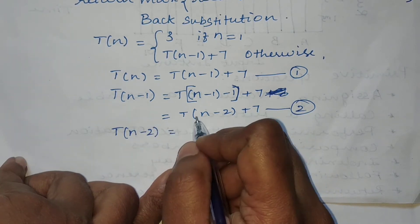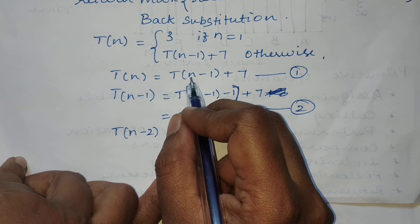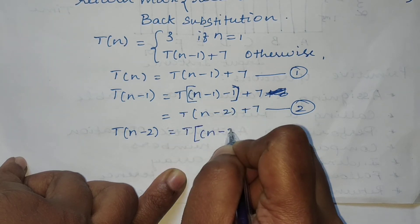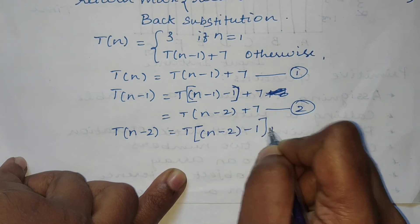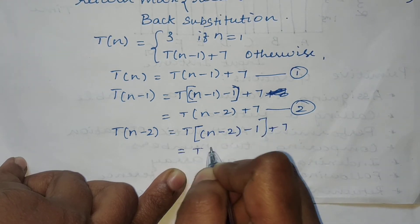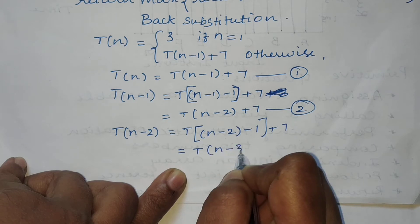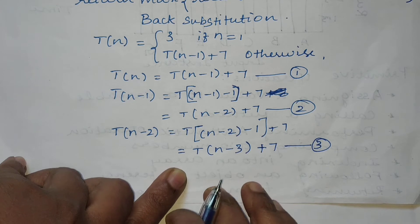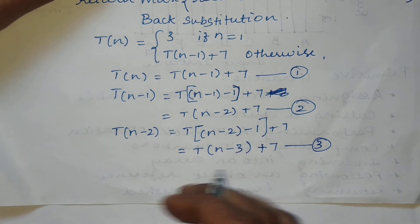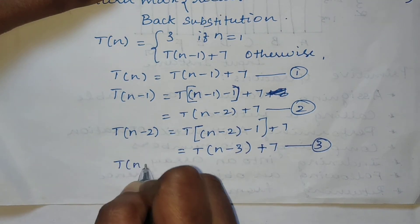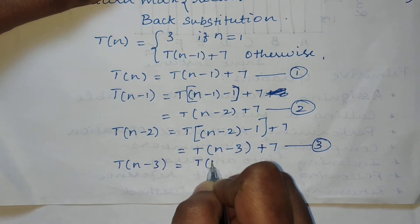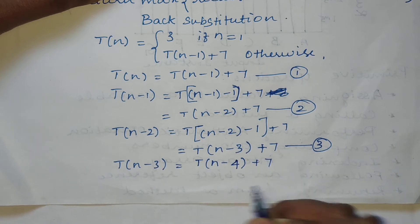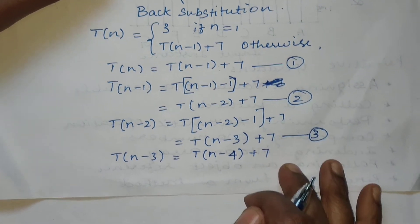Now we're going to find the value for T(n-2). In the place of n we substitute n-2, so n-2 minus 1 gives us T(n-3) + 7. This is the third equation. The next iteration gives T(n-3) = T(n-4) + 7, and so it goes on up to some constant value.